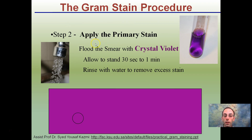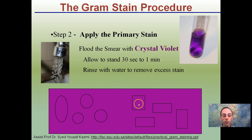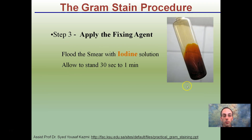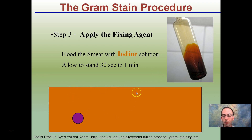Step two: apply the primary stain. Flood the slide with crystal violet — a very purple color. Allow the stain to sit for 30 seconds to a minute, then rinse with water to remove excessive stain. The little circles and boxes here represent different bacteria. We flood the whole area with crystal violet and let it sit for a period of time.